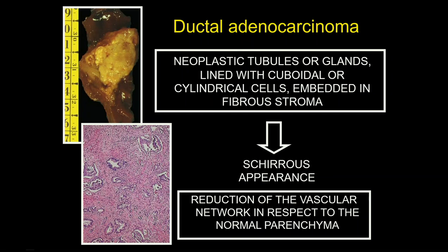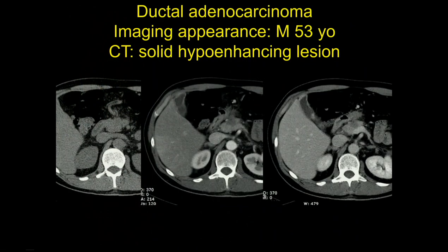The main pathological characteristic of ductal adenocarcinoma is the scirrhous appearance, with a reduction of the vascular network in respect to the normal parenchyma, leading to a hypo appearance — hypodense, hypoechoic, hypointense, hypovascular appearance. The typical appearance is a solid lesion when small.